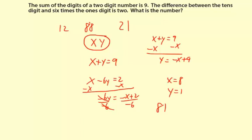Let's check to make sure that works. The sum of the digits is 9, well 8 plus 1 equals 9. So that works out just fine.